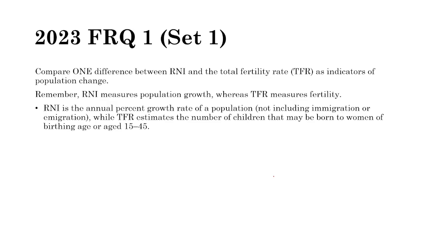A 2023 FRQ compares RNI to TFR: RNI is the annual percent growth rate of a population, not including migration, while TFR estimates the number of children that may be born to a woman between ages 15 to 45. Simply giving the definitions of these two terms is an acceptable answer, since they're clearly different measurements.